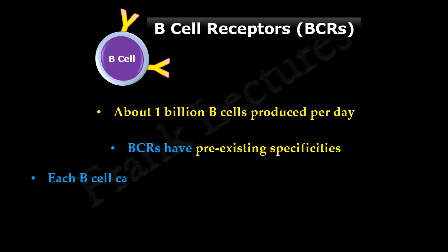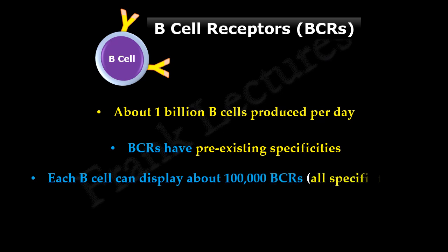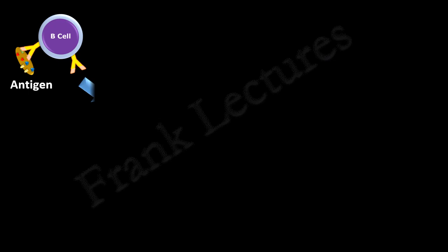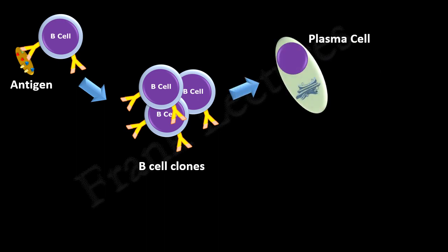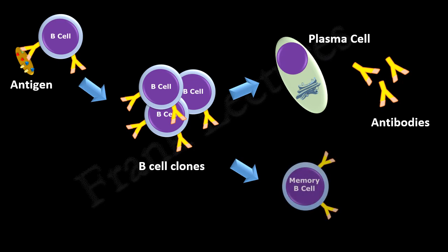Each B-cell can display many B-cell receptors on its surface. Importantly, all these B-cell receptors are specific for only one particular epitope on an antigen. When a mature B-cell encounters an antigen, it gets activated and proliferates into a large clone of B-cells. Some of them differentiate into antibody-producing plasma cells, and others become long-lived memory cells. Both plasma cells and memory cells will be specific to the epitope which the mature B-cell encountered initially.